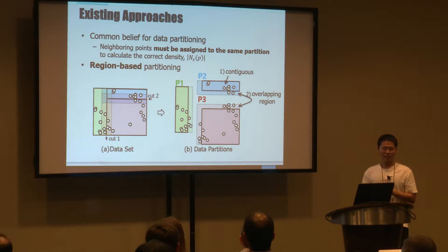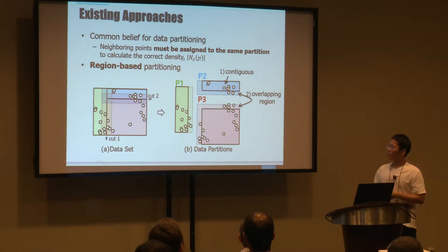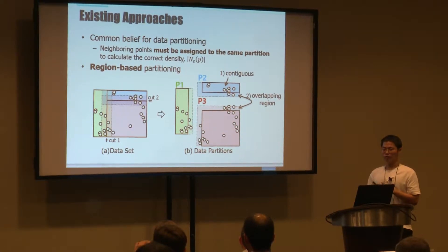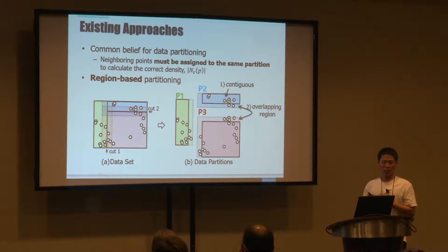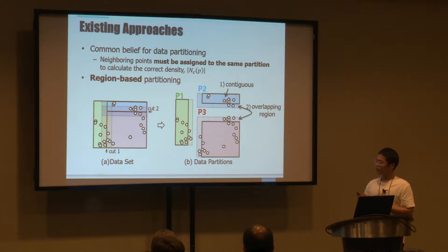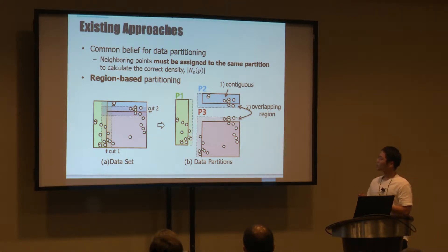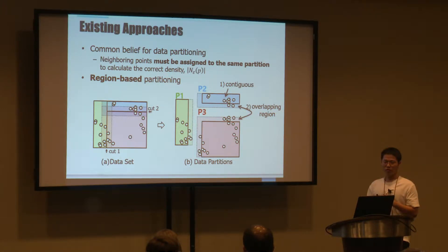Now let's talk about existing parallel DB Scan algorithms. I focus on the partitioning phase because it is the most critical bottleneck in parallel processing. The common belief is that neighboring points must be assigned to the same partition to calculate the correct density of the neighborhood — that is, the number of neighboring points of a given point. Most existing algorithms adopt region-based partitioning, where the data space is divided among multiple workers. The first characteristic is that divided spaces must be contiguous, so neighboring points stay in the same partition to count the correct number of epsilon-neighbors.